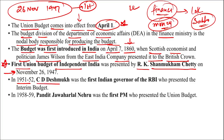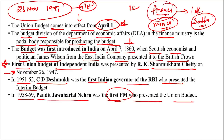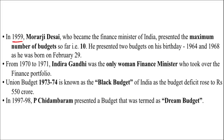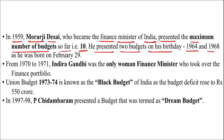In 1951-52, C.D. Deshmukh was the first Indian Governor of RBI who presented the interim budget. In 1958-59, Pandit Jawaharlal Nehru was the first Prime Minister who presented the Union Budget. In 1959, Morarji Desai became the Finance Minister who presented the maximum number of budgets — 10 in total. He presented two budgets on his birthday in 1964 and 1968, as he was born on 29th February.